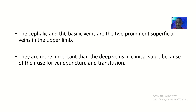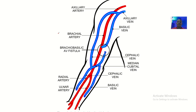The cephalic and basilic veins are the two prominent superficial veins in the upper limb. They are more important than deep veins in clinical value because of their use for venipuncture and transfusion. If a patient needs a blood transfusion urgently, these are the veins used — either the cephalic, the basilic, or the median cubital vein which links the two. You can see the basilic vein on the medial side.